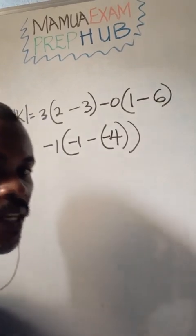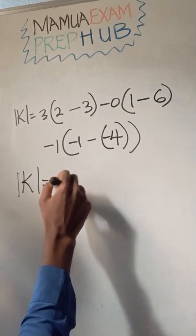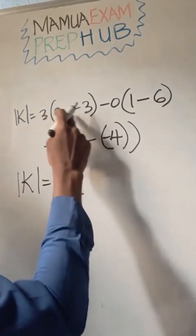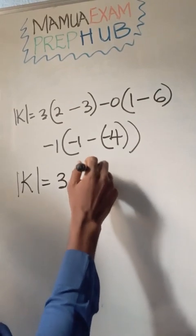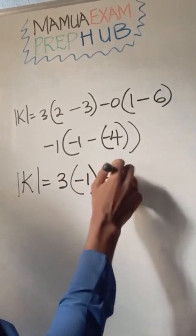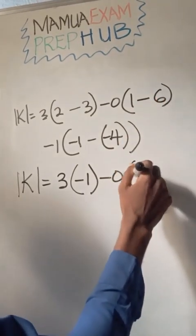Now if we simplify further, determinant K will give us: this is 3 times, 2 minus 3 is minus 1, I have minus 1. I have minus 0, 1 minus 6 is minus 5.